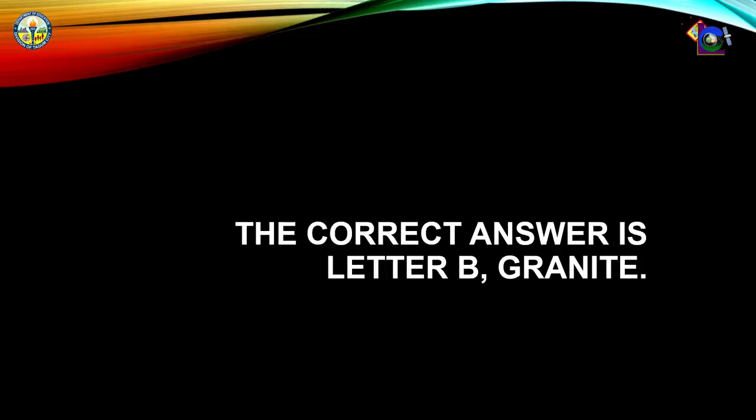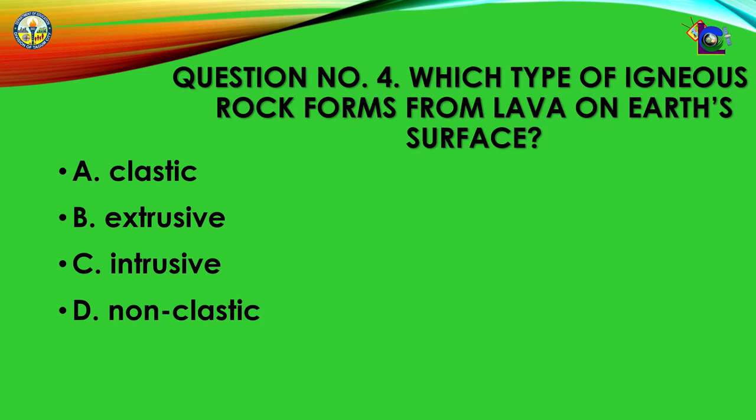Number 4: Which type of igneous rocks forms from lava on the earth's surface? A. Clastic, B. Extrusive, C. Intrusive, D. Non-clastic. The correct answer is letter B — Extrusive.